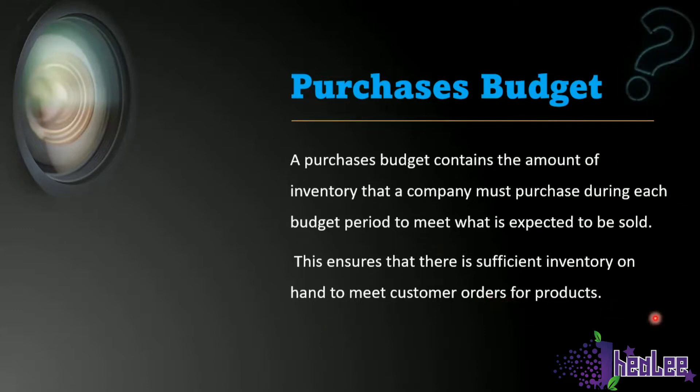A Purchases Budget is similar to the Production Budget. The Production Budget is prepared by a manufacturing industry and shows the amount of products to be manufactured, while the Purchases Budget is prepared by the retailer to know how much items they need to purchase to meet customer demand.